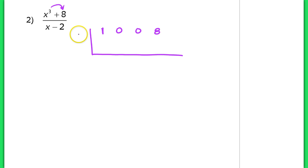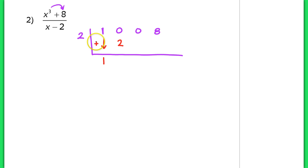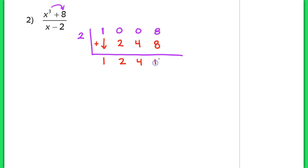We start the synthetic division. This first term always drops — you've got to drop that first term. The number on the bottom needs to be multiplied by the number on the outside: 1 times 2 is 2, so I place that 2 underneath. You're adding the numbers inside vertically: 0 plus 2 is 2. Multiply 2 times 2, we get 4. 0 plus 4 is 4. Now multiplying 2 times 4, I get 8, bringing down a 16.